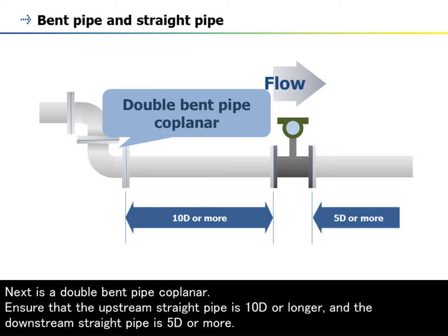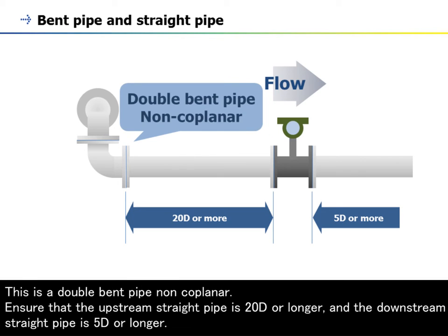Next is a double bend pipe coplanar. Ensure that the upstream straight pipe is 10D or longer and the downstream straight pipe is 5D or longer. This is a double bend pipe non-coplanar.